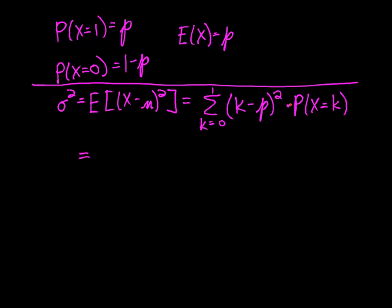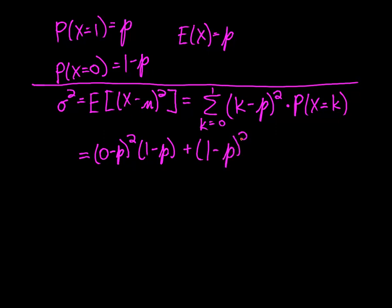We'll expand out that sum. For k equals 0, I get 0 minus p squared, and the probability that x equals 0 is 1 minus p, so I multiply by 1 minus p. For k equals 1, I get 1 minus p squared, times the probability that x equals 1, which is just p.